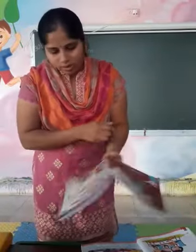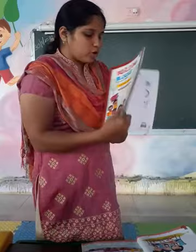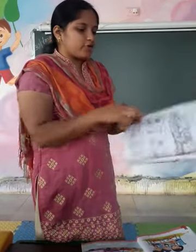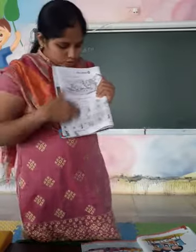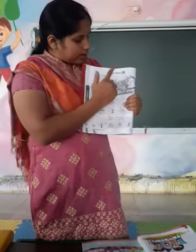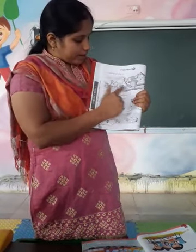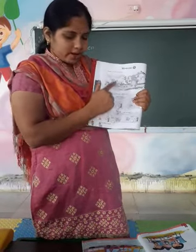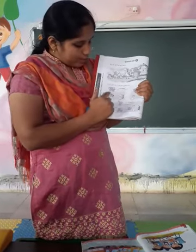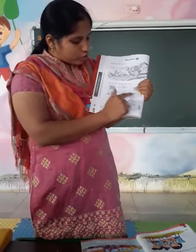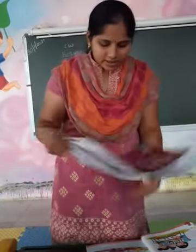Now open your worksheet book — the brown color book — to page number 46. This page will be your homework. Write HW and the date. Look at the picture — there are pictures of animals given. According to that, below you have to tick: who is before, who is between, and who is after.